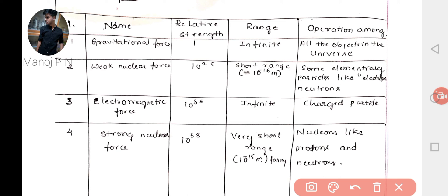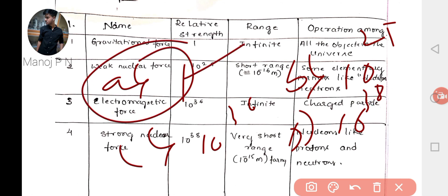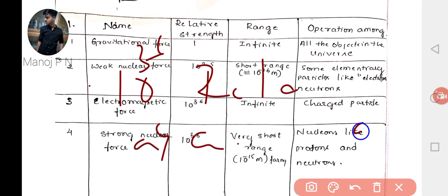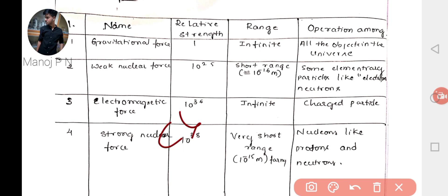Now let's look at how questions will be asked in the CET exam. For example: what is the relative strength of the gravitational force? Options: A = 1, B = 10²⁵, C = 10³⁶, D = 10³⁸. Also, which force has a relative strength of 10³⁶? That is the electromagnetic force. If asked which two forces have infinite range, the answer is gravitational force and electromagnetic force.